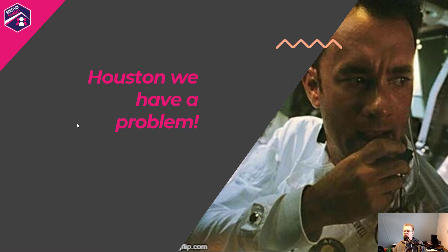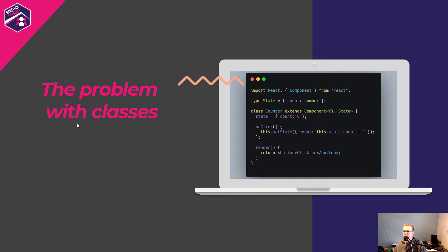A class component looks something like this: a class Greeter extends Component from React, it defines some props — this is a TypeScript example — and it has a render function which decides what should be rendered. That's simple, but class-based components have some problems. They work, but sometimes they make life harder than they need to.